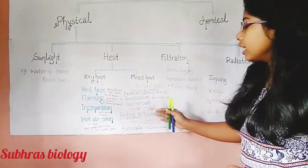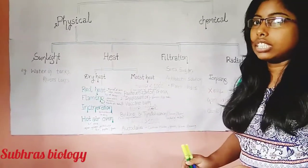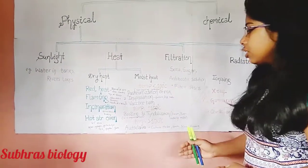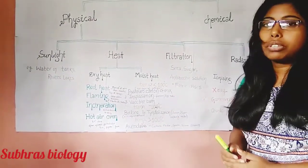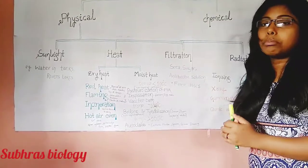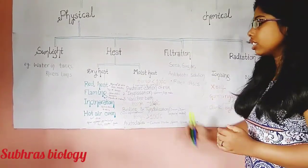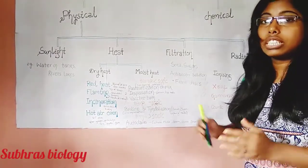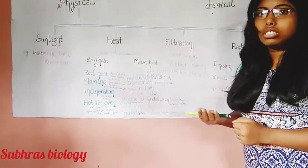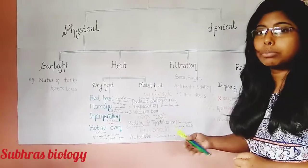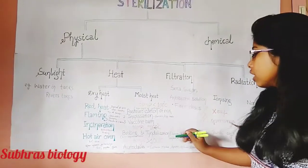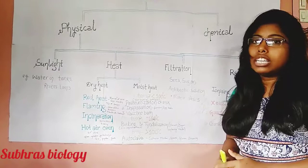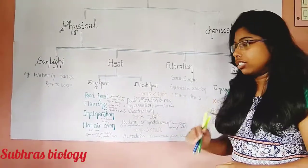At 100°C, boiling and tyndallization are the processes used. Boiling kills vegetative forms but not sporing forms, so other methods are preferable. In tyndallization, serum or sugar-containing media are sterilized.